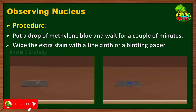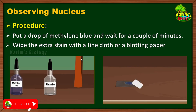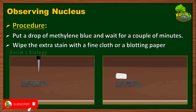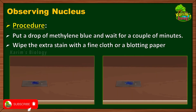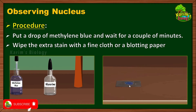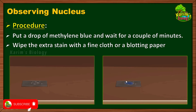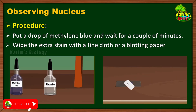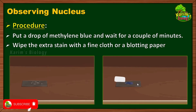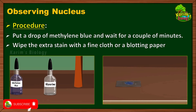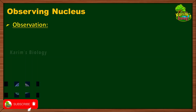Afterwards, wipe the extra stain with a fine cloth or blotting paper. Since we have already added some water and then added stain, the quantity of liquid over the specimen may become excessive. To remove this, apply a blotting paper at the margins of the slide so that excessive stain and water are removed from the specimen.